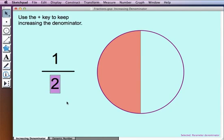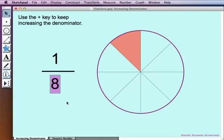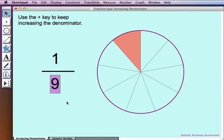I'll select 2 and I'll press the plus key on my keyboard. Each time I press it, I increment the denominator by 1, and we can observe the corresponding fraction as parts of a circle.